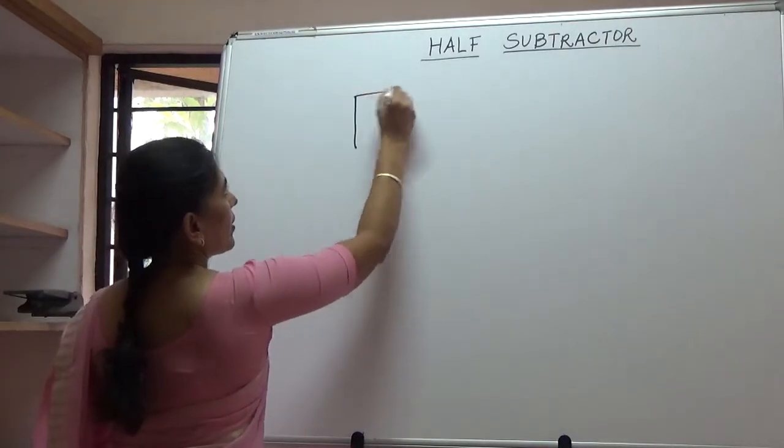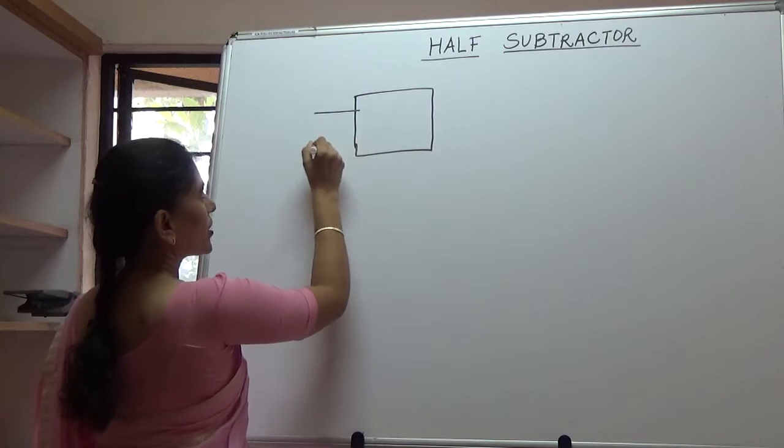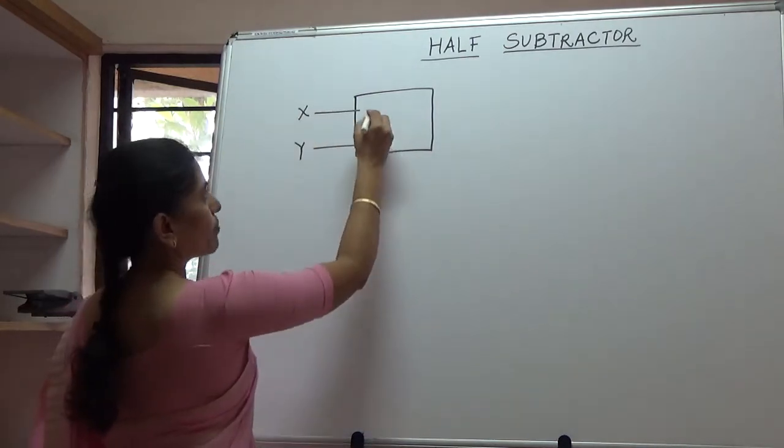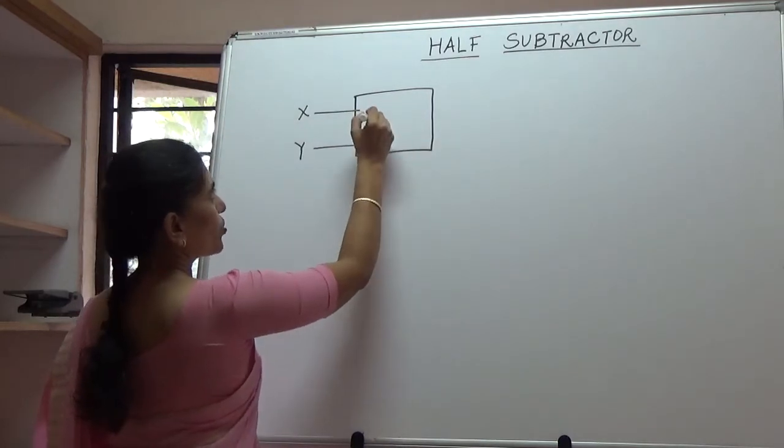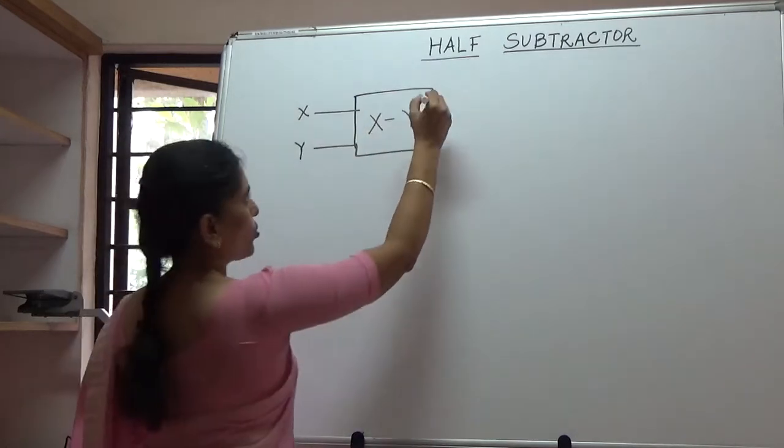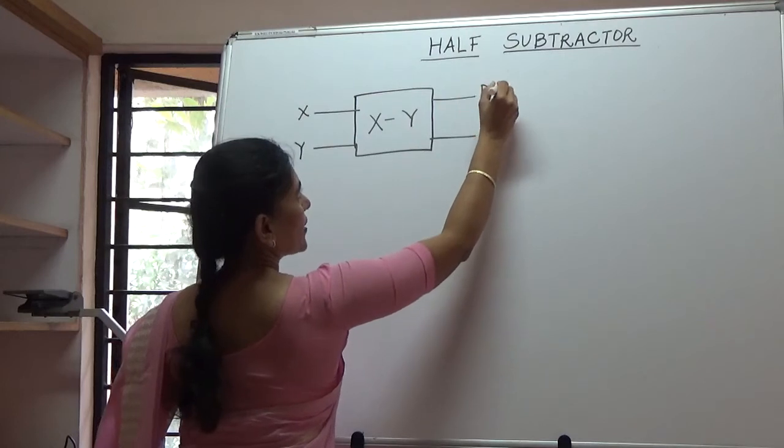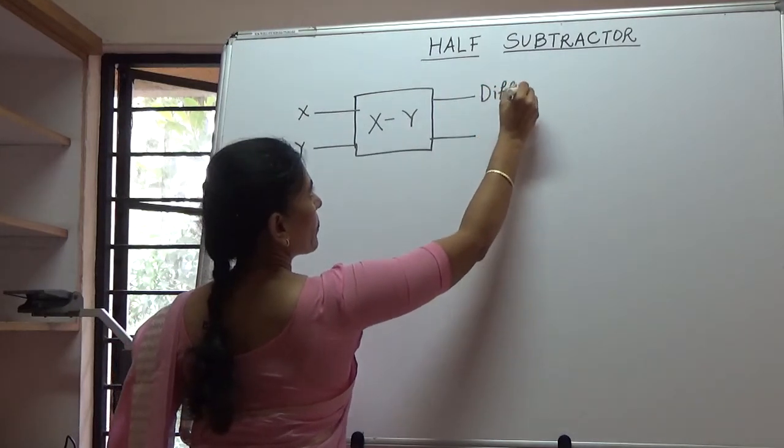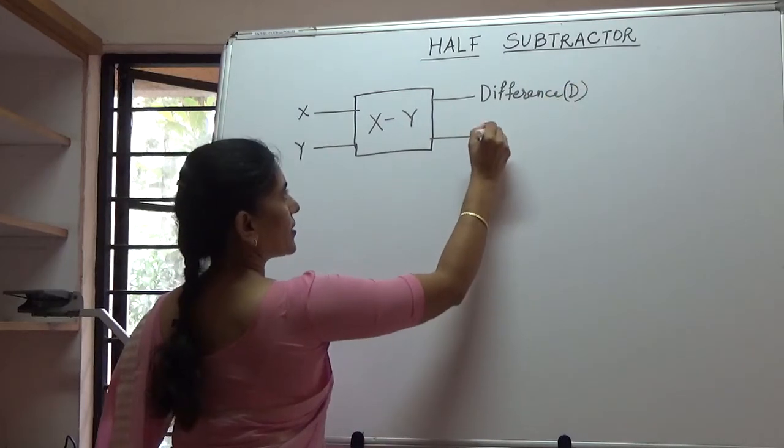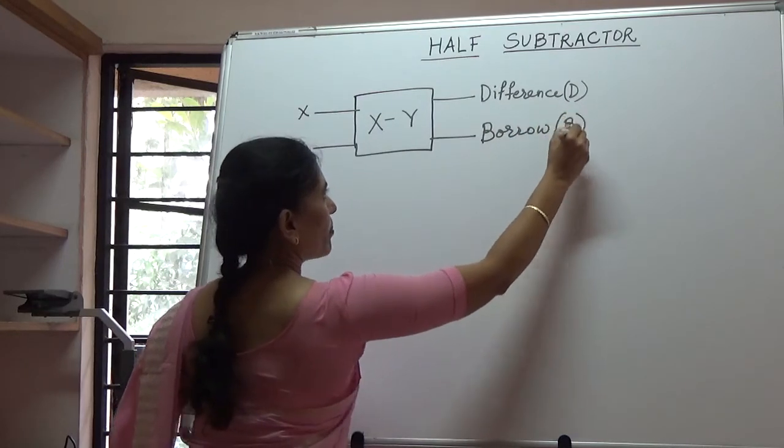A half subtractor has two inputs, let's call them X and Y, and this particular combinational circuit is going to perform X minus Y operation to generate two outputs. The first is called the difference D and the second is the borrow bit which is denoted by B.